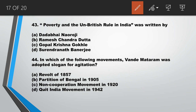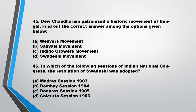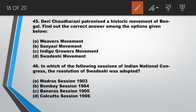Question number 43: 'Poverty and Un-British Rule in India' was written by answer A, Dadabhai Naoroji. Question number 44: in which of the following movements was Vande Mataram adopted as a slogan for agitation? Answer is B, Partition of Bengal in 1905. Question number 45: Devi Chaudhurani patronized a historic movement of Bengal. Answer is B, Sanyasi Movement.